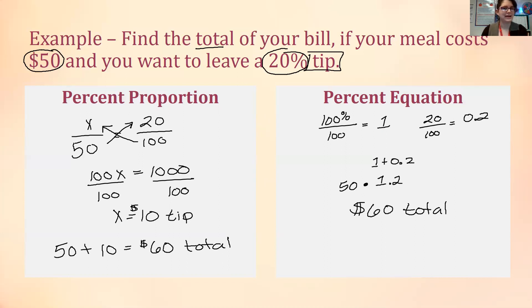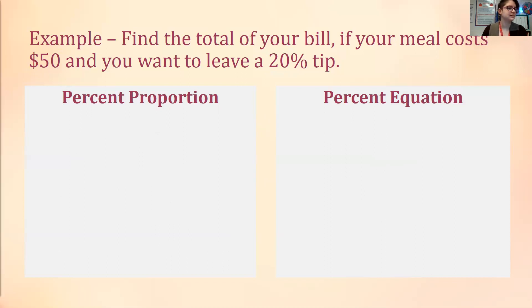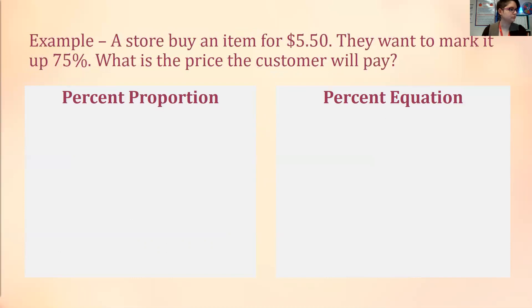Let's look at one more example. This time with markup. A store buys an item for $5.50. They want to mark it up 75%. What is the price the customer will pay? In this case markups always added to our original price. So we're looking for our markup amount. We're marking it up 75%.